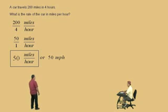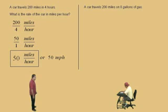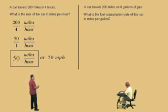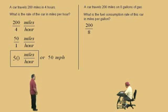Now, let's do another one, Charlie. A car travels 200 miles on 8 gallons of gas. So this is a rate, but we're looking for miles per gallon here. What is the fuel consumption rate of this car in miles per gallon? So miles per gallon means we have to put miles over gallon. So 200 miles over 8 gallons. That's how we start. And now we can reduce.